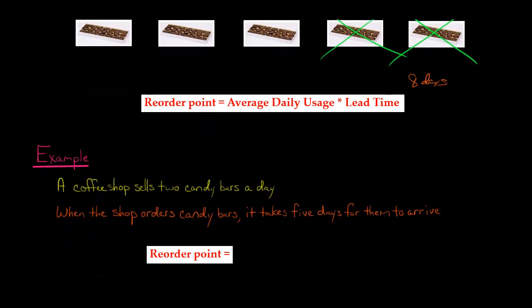Well, let's just apply our formula. We've got two candy bars that we sell every day. That'll be our average daily usage. So two times what's our purchase order lead time? It takes five days for them to arrive, so that's five. Two times five is 10.